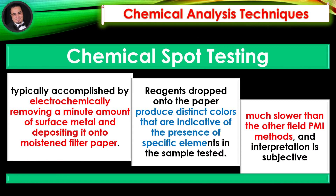Chemical Spot Testing. The chemical spot test is typically accomplished by electrochemically removing a minute amount of surface metal and depositing it onto moistened filter paper. Reagents dropped onto the paper produce distinct colors that are indicative of the presence of specific elements in the sample tested. Chemical spot testing is much slower than the other field PMI methods and interpretation is subjective.